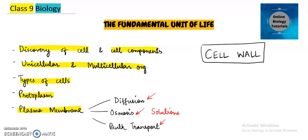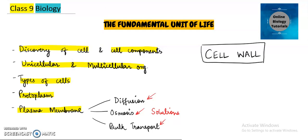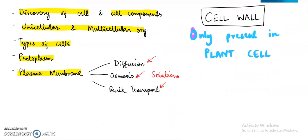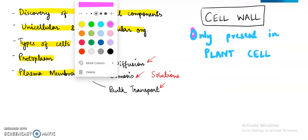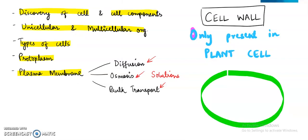If you have any query, please don't forget to ask — the email is already given in the description of each video. Now, without further ado, let's get started. Cell wall is first of all only present in plant cells. Whenever we are talking about it, it should be clear that we are just talking about plant cells — it is not present in animal cells.